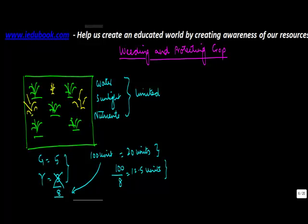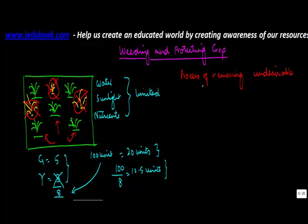In order to ensure that these undesirable plants are not destroying the nutrients of the genuine plants, they are removed from the crop. The process of removing these undesirable plants is called weeding.